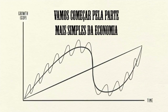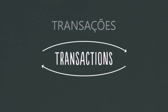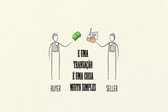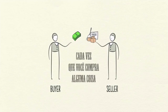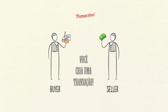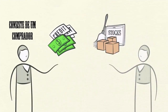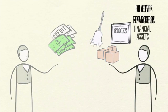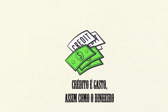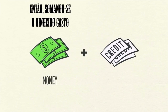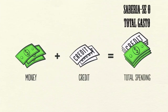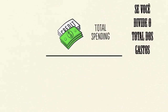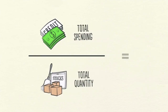Let's start with the simplest part of the economy: transactions. An economy is simply the sum of the transactions that make it up, and a transaction is a very simple thing. Each transaction consists of a buyer exchanging money or credit with a seller for goods, services, or financial assets. Credit spends just like money, so adding together the money spent and the amount of credit spent, you can know the total spending. The total amount of spending drives the economy. If you divide the amount spent by the quantity sold, you get the price.